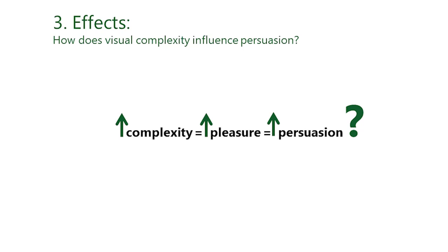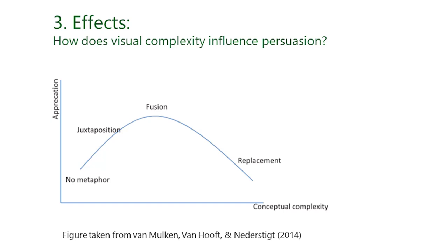However, findings from previous research indicate that complexity is only pleasurably arousing within limits. A recent study provides evidence that the effects of visual complexity form an inverted U-curve, with fusions being the tipping point. Ads with replacement figures yielded similarly low attitude scores as ads with straightforward images. The explanation offered was that replacement figures were too complex to be understood, and that this decreased comprehension, which then translated into decreased processing pleasure and ad liking. This implies that caution is warranted when using visual rhetorical figures — if a figure is too complex, it might fail to produce the desired effect because people just don't understand what the image wants to say and get frustrated as a consequence.